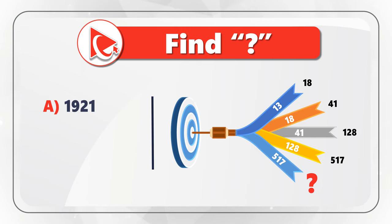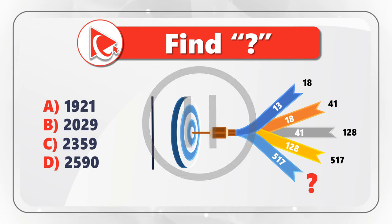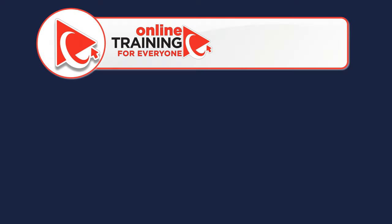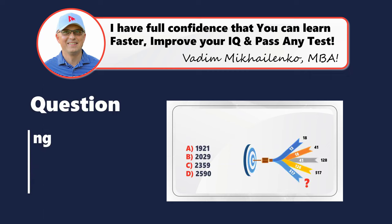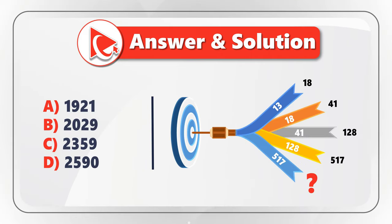You need to select from four choices: Choice A is 1921, Choice B is 2029, Choice C is 2359, and Choice D is 2590. Give yourself a moment — maybe pause this video to see if you can calculate the answer. Are you ready? Let's move forward so I can share my version of the answer. If you have a better way to solve it, please post in comments.